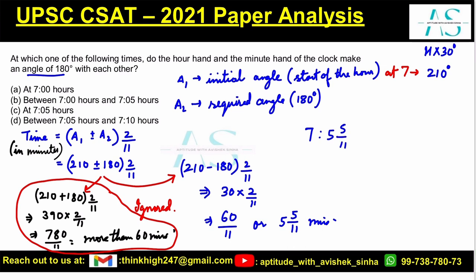Is it exactly 7 o'clock that the hands form 180 degrees? No. Between 7 and 7:05? No — the time exceeds 7:05, so option 2 is not taken. At exactly 7:05? No. Between 7:05 and 7:10? Absolutely correct. Option D is the correct time frame.